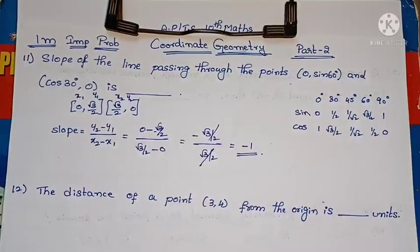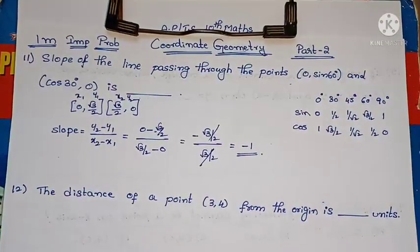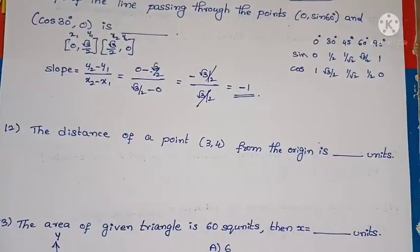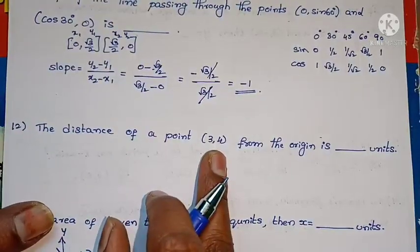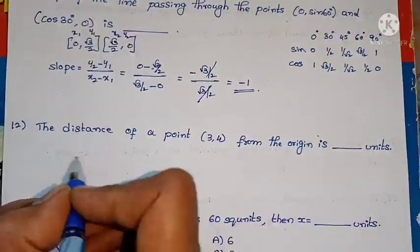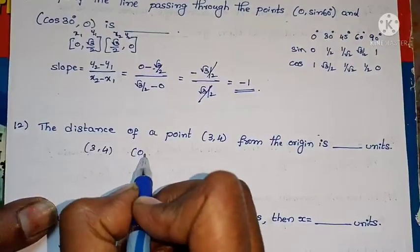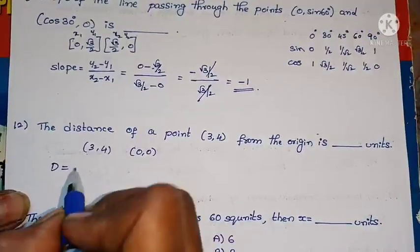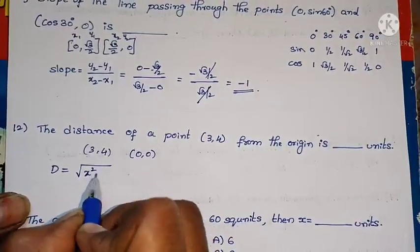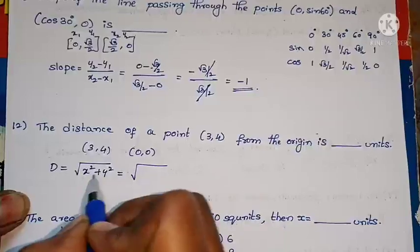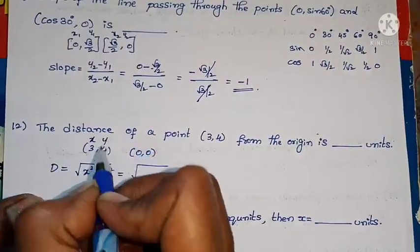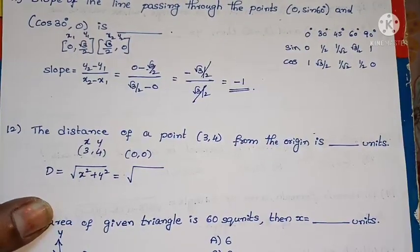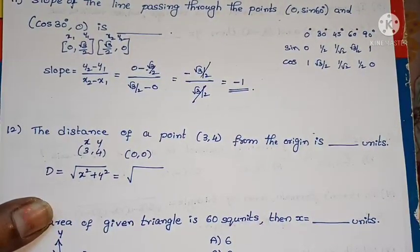Just use the formula. For slope, the formula is (y2 - y1)/(x2 - x1). In coordinate geometry last exercise, there's one more problem. Next is the 12th question. The distance of a point (3,4) from the origin is. One point is (3,4), another point is origin. In this case, I'll directly apply the formula from the last video. What's the distance formula? Root of (x² + y²).